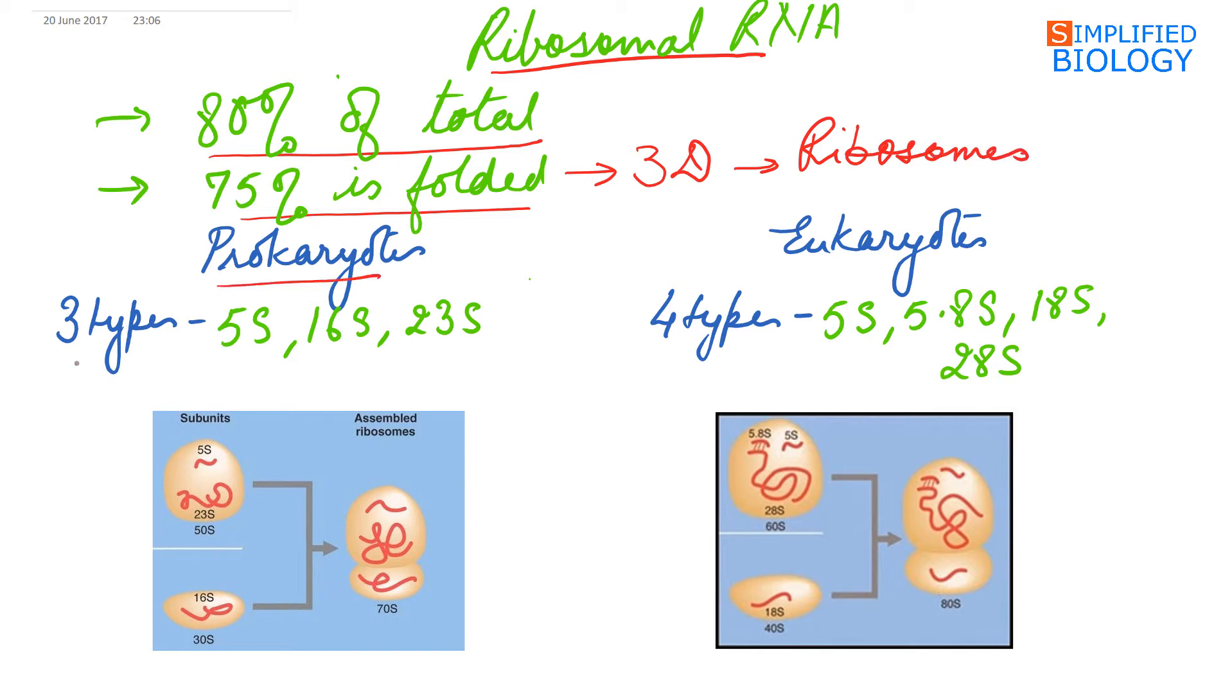In prokaryotes, ribosomal RNA is of three types: 5S, 16S, and 23S. While in eukaryotes, it is of four types: 5S, 5.8S, 18S, and 28S. S is Svedberg's unit for sedimentation coefficient.